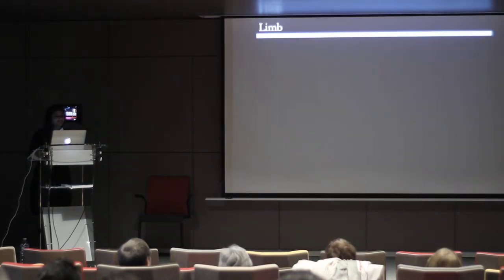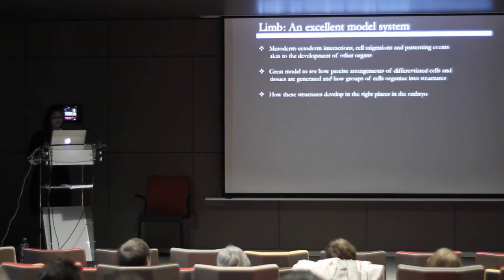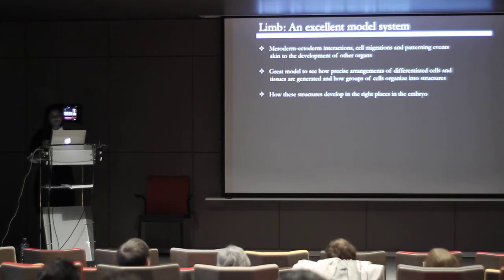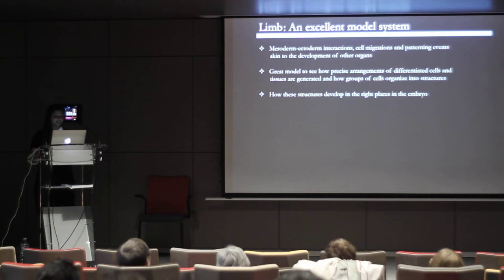The limb in itself serves as an excellent model system to study these processes. The mesoderm-ectodermal interactions, cell migrations, and patterning events are not only restricted to the development of a limb, but also to other developing organs. It's also a great model to see how groups of cells structure themselves and how these structures form in the right precise locations along an embryonic axis.